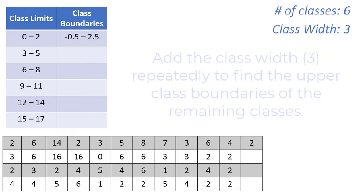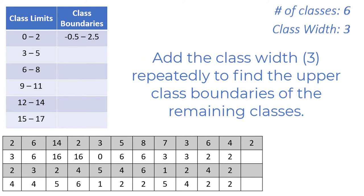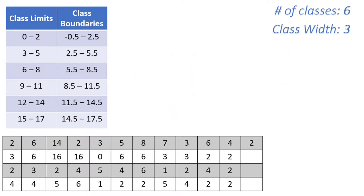Once you have the first row, simply increment by the class width to find the remaining class boundaries — for us that means adding 3 repeatedly. This gives us negative 0.5, 2.5, 5.5, 8.5, and so on. To verify you've created your class boundaries correctly, check that the upper bound of each class is the same as the lower bound of the next class. The upper bound of the first class is 2.5 and the lower bound of the next class is also 2.5. You should check this for all class boundaries.